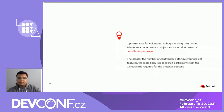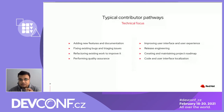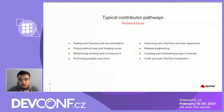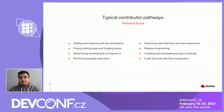Some pathways with a more technical focus include adding new features and documentation, fixing existing bugs and triaging issues, refactoring existing work to improve it, performing quality assurance, improving user interface and user experience, release engineering, creating and maintaining a project roadmap, and code and UI localization. Ask yourself: does your project currently offer new and existing contributors opportunities to contribute rewardingly, or even take ownership of work, in each of these pathways? One general way to begin expanding your project is by making concerted efforts to formally refine, document, and advertise these contributor pathways.